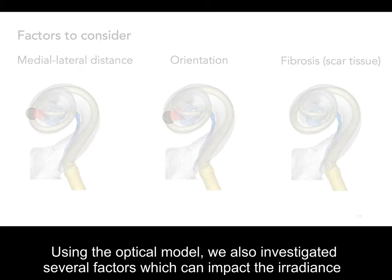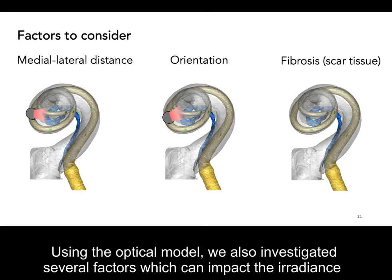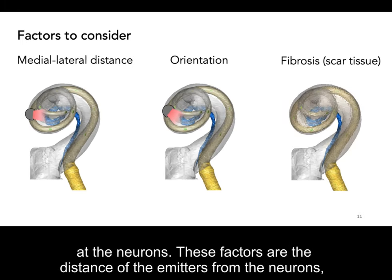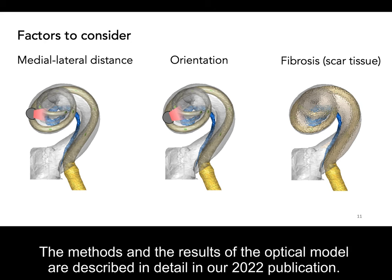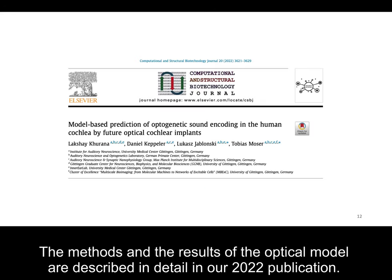Using the optical model, we also investigated several factors which can impact the irradiance at the neurons. These factors are the distance of the emitters from the neurons, the orientation of the emitters towards the neurons, and the formation of scar tissue. The methods and results of this optical model are described in detail in our 2022 publication.